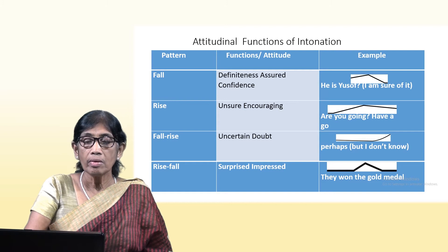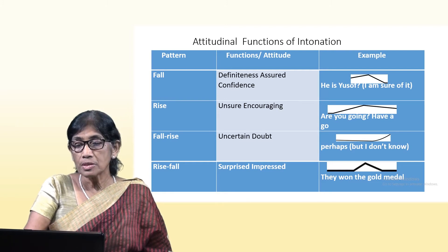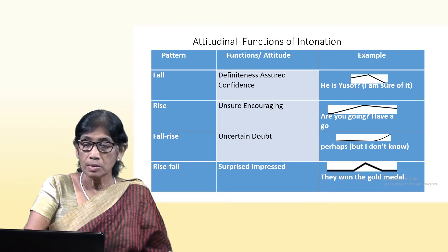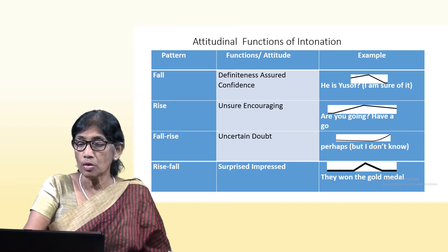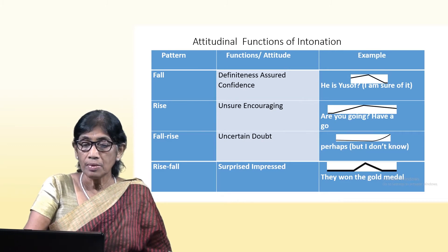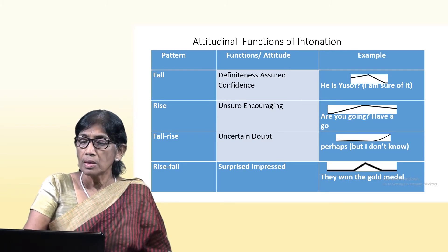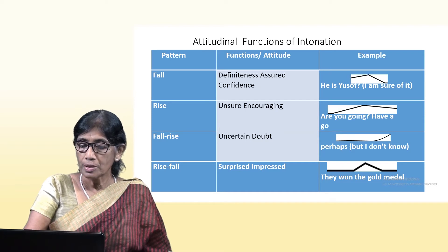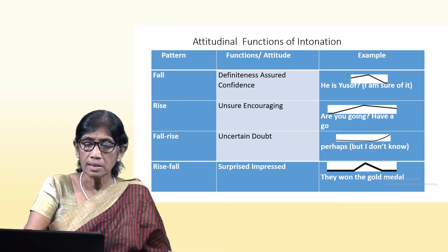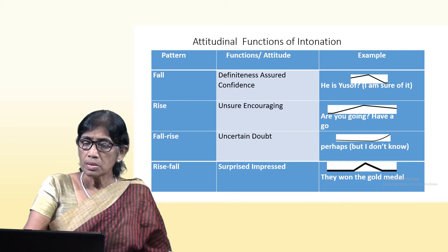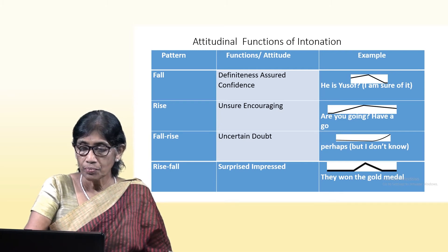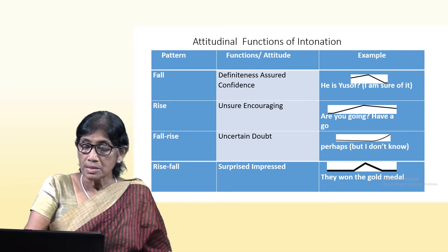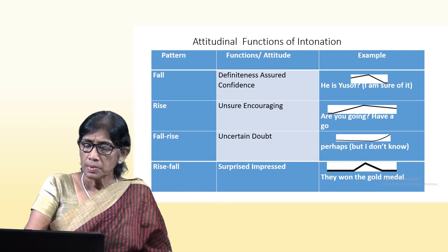Looking at intonation patterns, functions, attitudes, and examples of how the voice rises and falls: for definiteness or assured confidence, we use a falling tone — for example, 'He is Yusuf.' For a rising tone, it conveys unsureness or encouragement — for example, 'Are you going to have a go?' For uncertain doubt, the voice rises or uses a fall-rise — for example, 'Perhaps, but I don't know.'